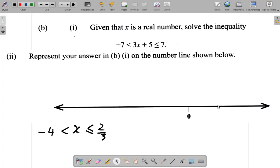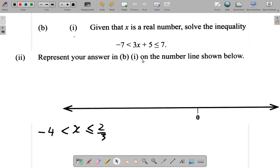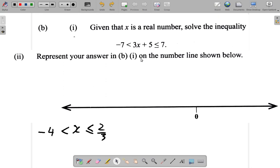Now, let's look at part two of question 4B. Earlier in part one, we saw that X was greater than negative four and at the same time less than or equal to two thirds.